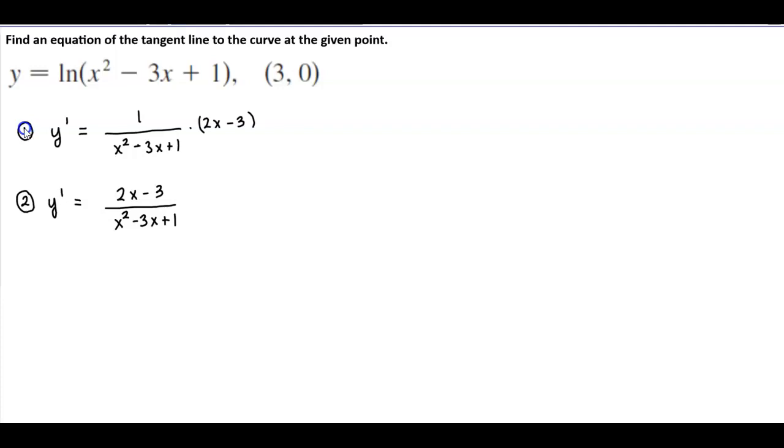So now what we want to do is figure out what is the equation of the tangent line at (3, 0). So we know that we have a value of 3, so we need to find out what is y prime of 3 to determine the slope.